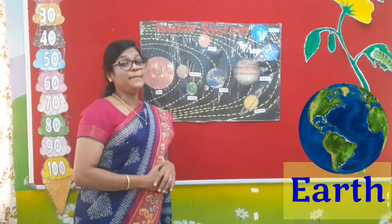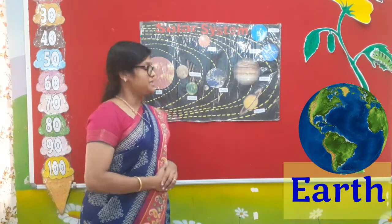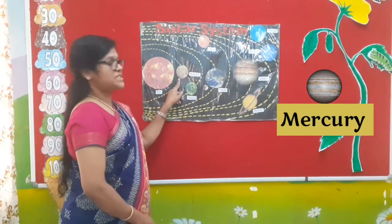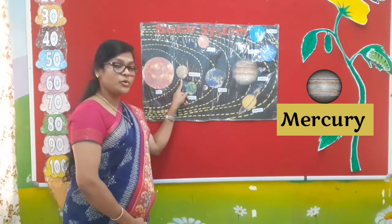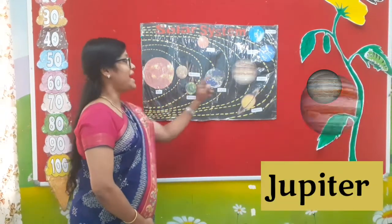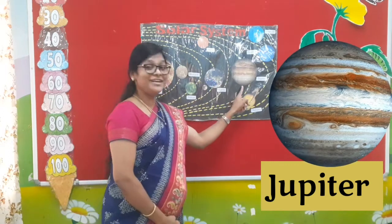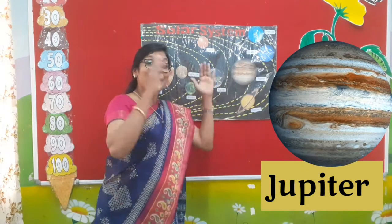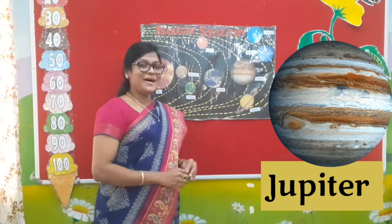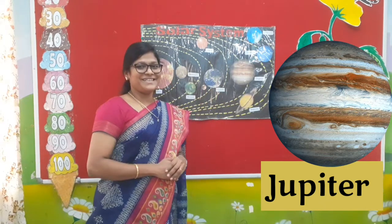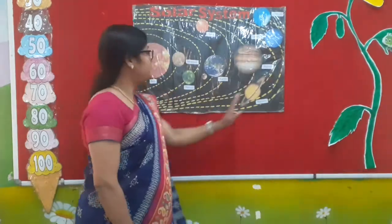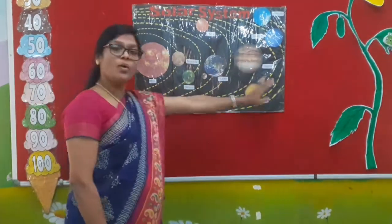Now I'll teach you the smallest and biggest planet. Mercury is the smallest planet — look, Mercury is the smallest planet. And Jupiter is the biggest planet — Jupiter is the biggest planet.